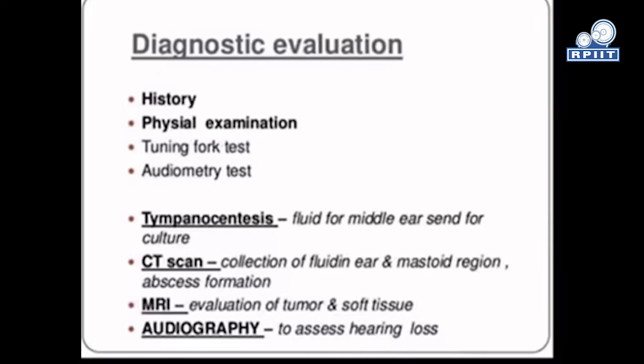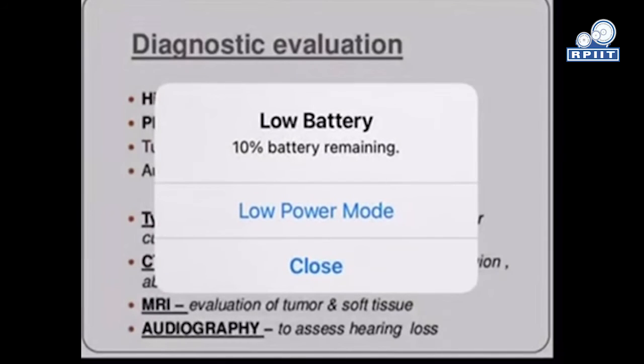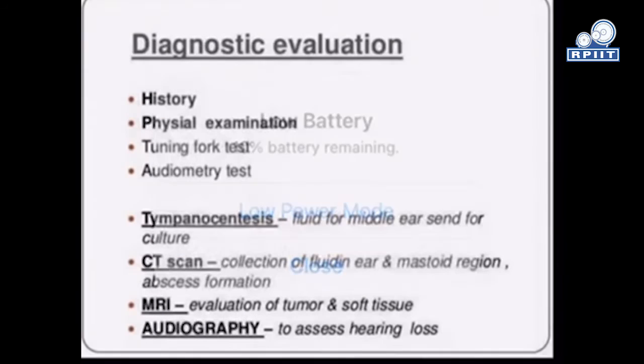Fluid from the middle ear is sent for culture. CT scan is used to assess collections of fluid in the ear and mastoid region, as well as abscess formation. MRI is used for evaluation of tumors and soft tissue. Audiography is used to assess hearing loss.